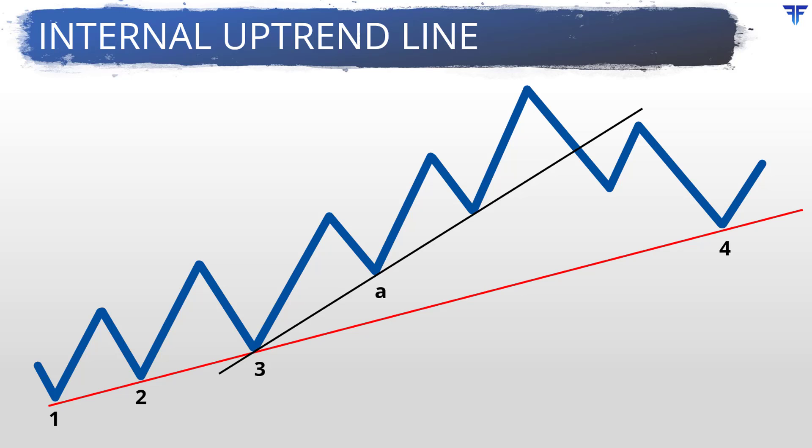In this case, the red-colored trendline is the main trendline, while the black-colored trendline is the internal trendline. You can think of the main trendline as the primary trendline and an internal trendline as the secondary trendline, or in some cases even the minor trendline.